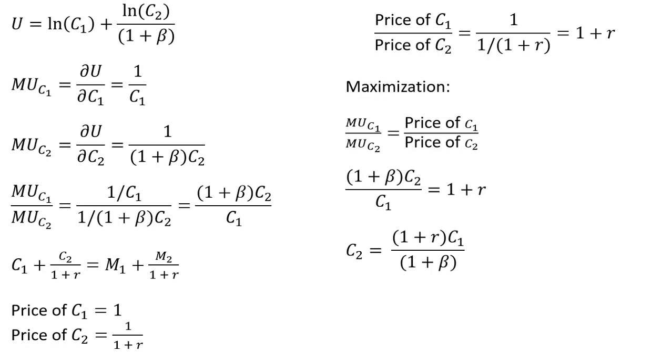One thing to note here is if R equals beta, you'll have complete consumption smoothing. The consumer will consume the same amount in each period.